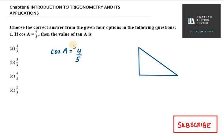It is very simple. You have to remember this saying: some people have curly brown hair till painted black. This is the way to remember the formula for sin, cos, tan, cosec, sec and cot. This is how you can remember the formula for all. Sin is P over H, cos is B over H, tan is P over B.